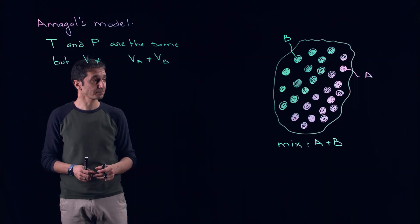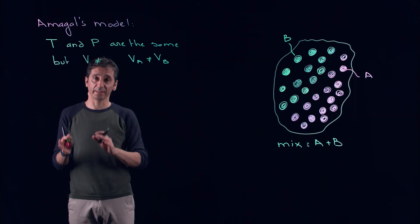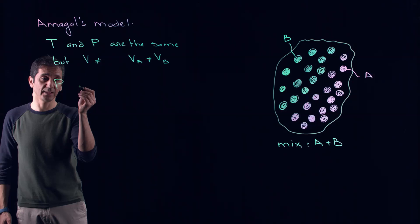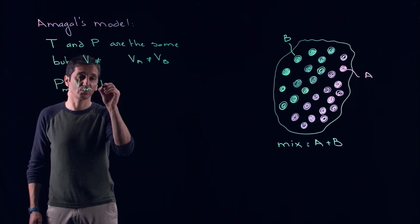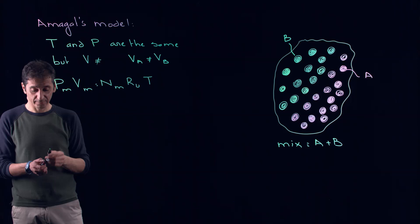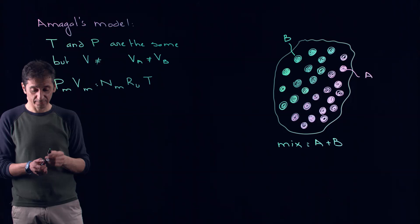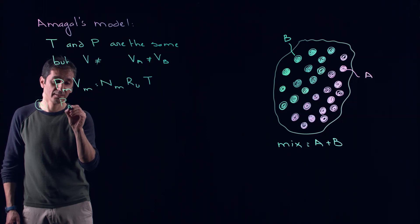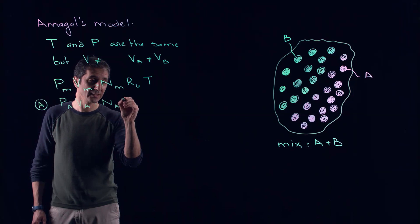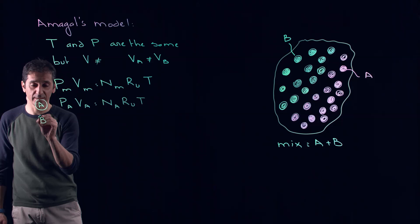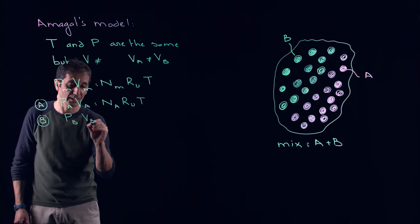We will be applying the ideal gas law to our mixture. This gives us P_M × V_M = N_M × R_universal × T. Applying this to component A: P_A × V_A = N_A × R_universal × T. The same for B: P_B × V_B = N_B × R_universal × T.